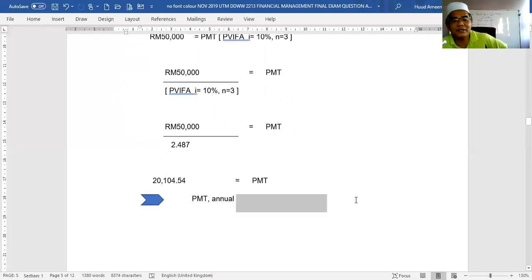So the PMT or payment of every year is 20,104.54. So the answer of the question is, annual installment is 20,104.54. So it's equal to payment.